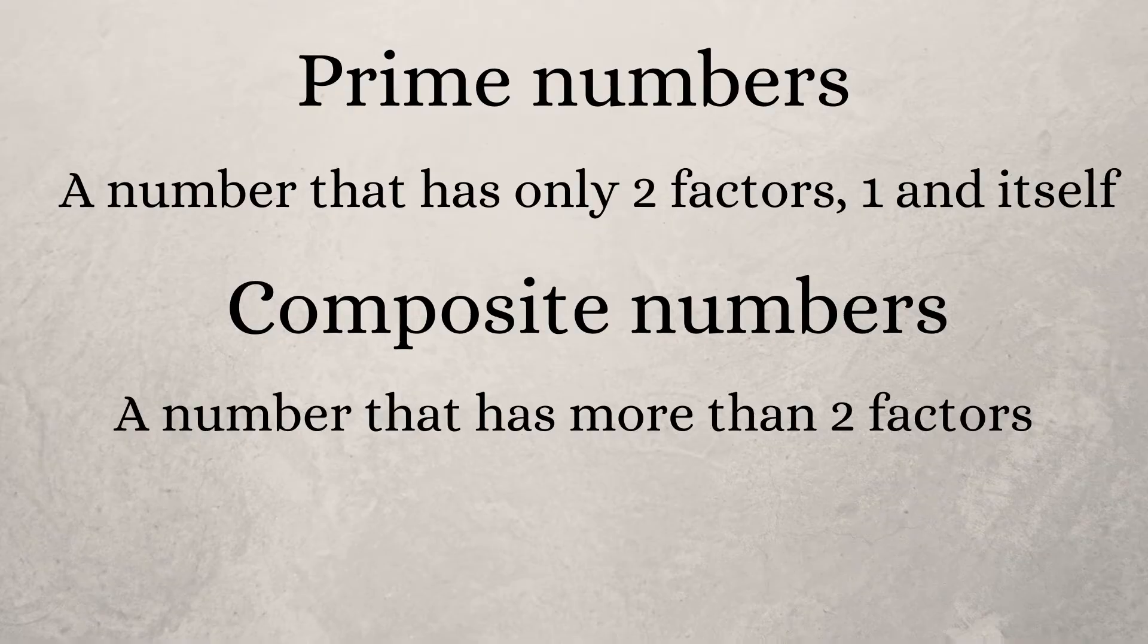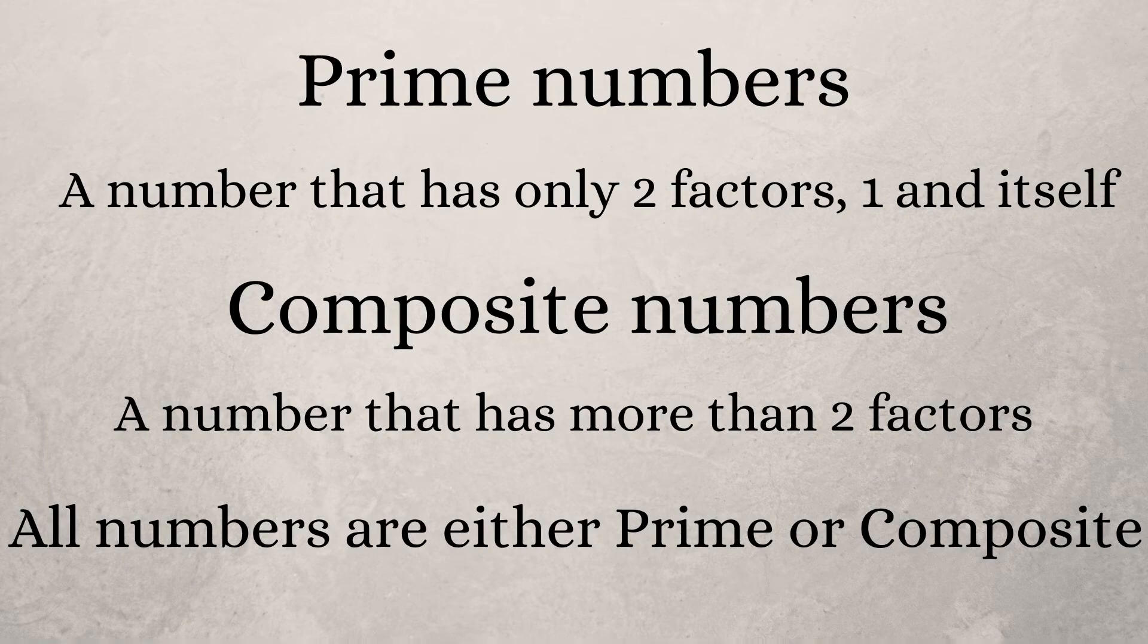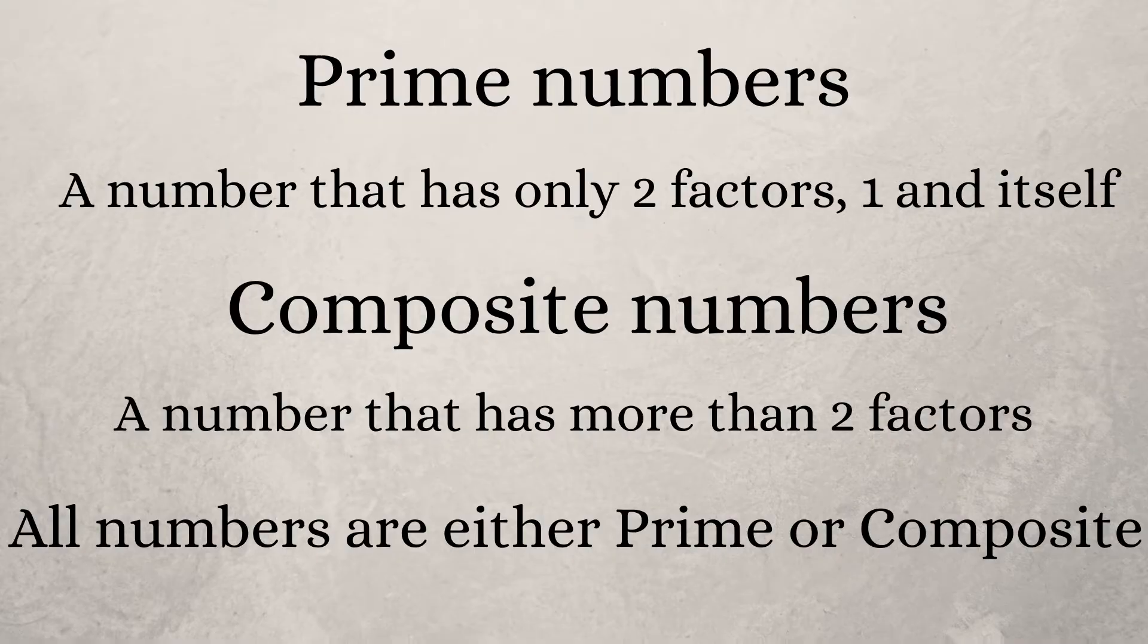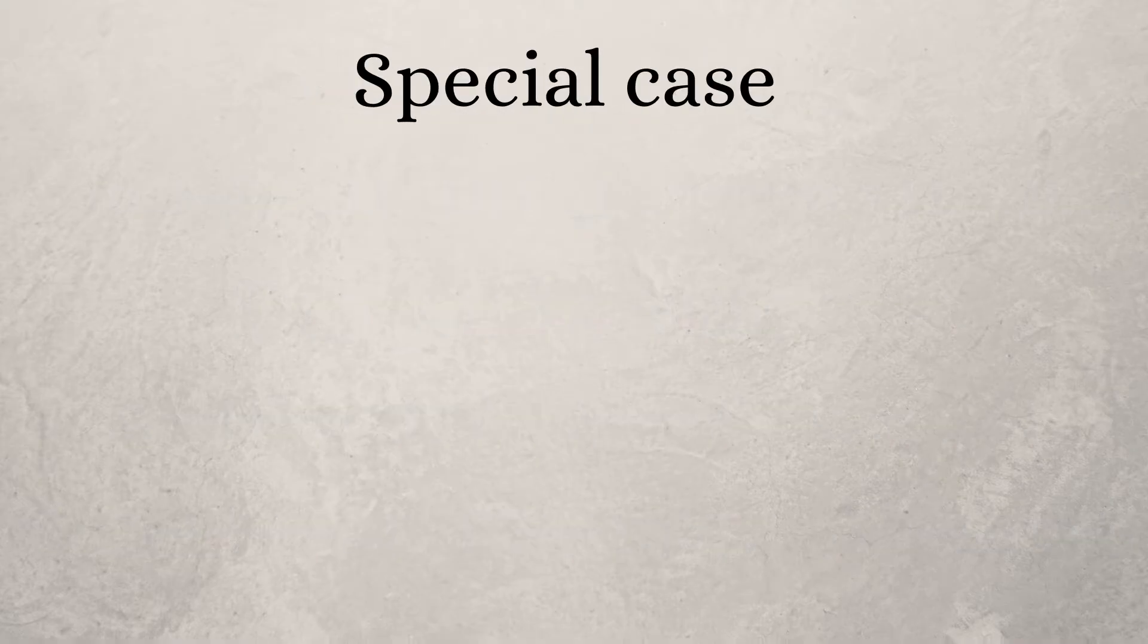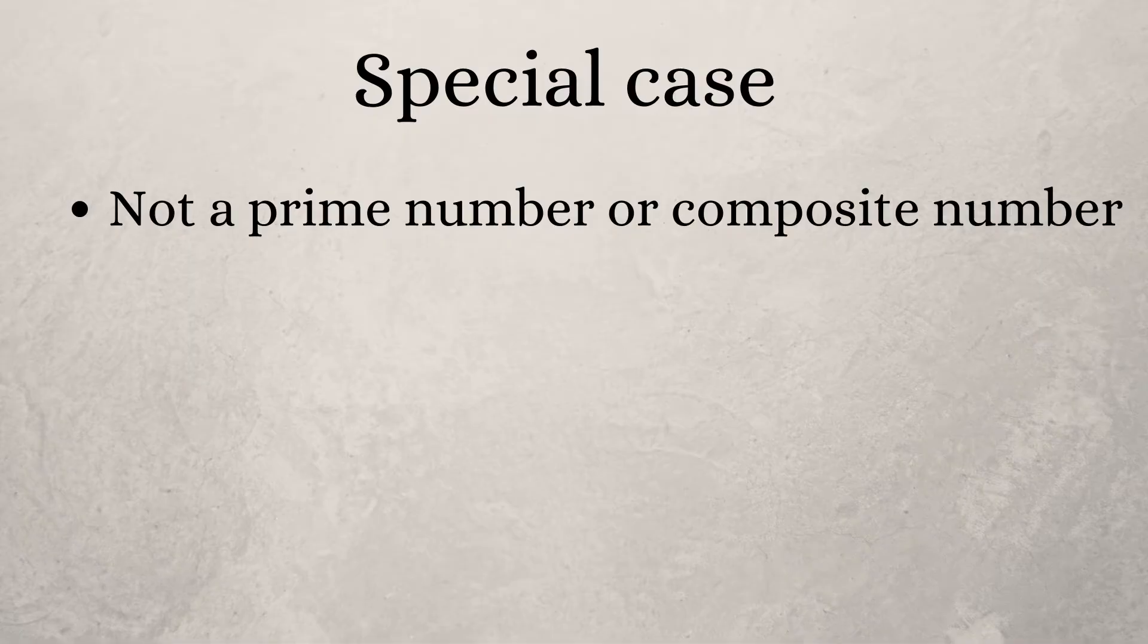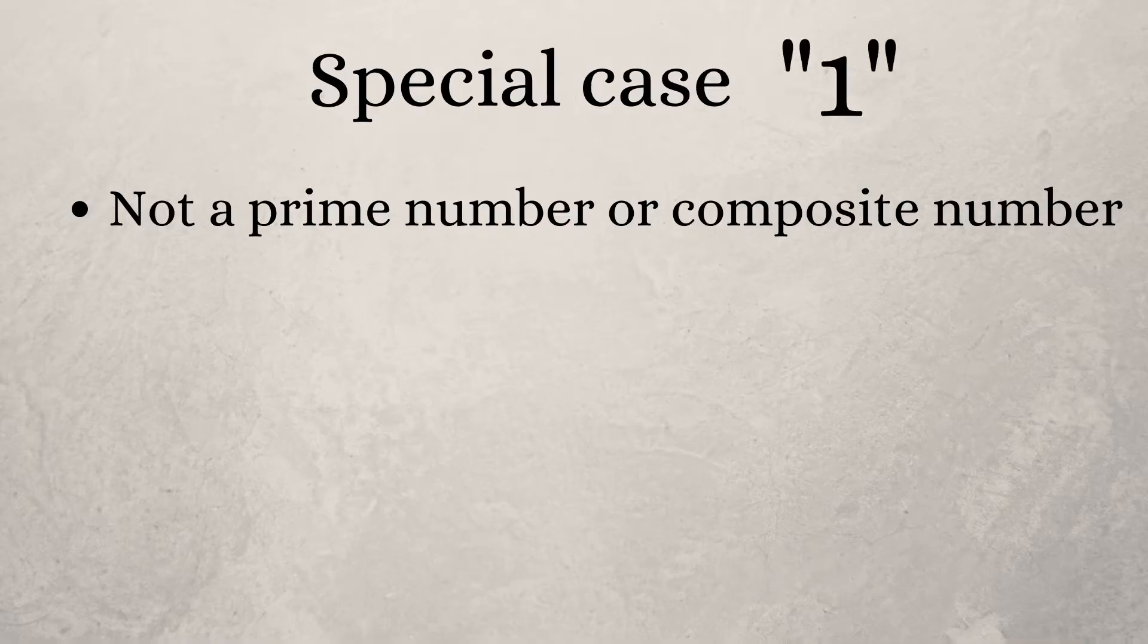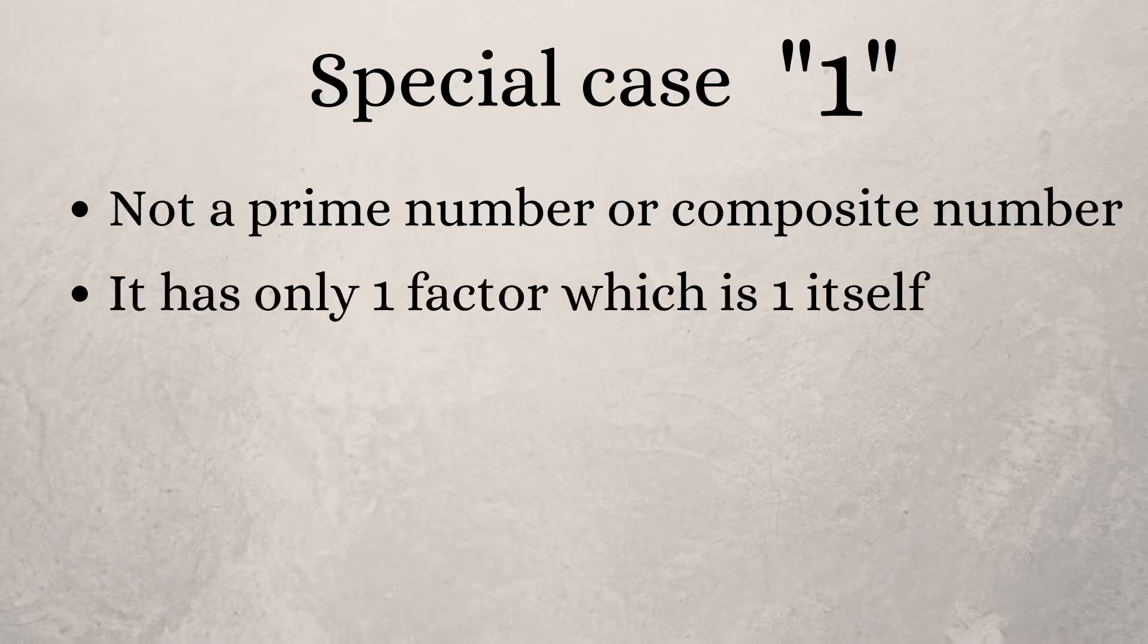Composite numbers are numbers which have more than two factors. All numbers are either prime or composite, except for a special number. This number is neither prime nor composite, and that special number is one.